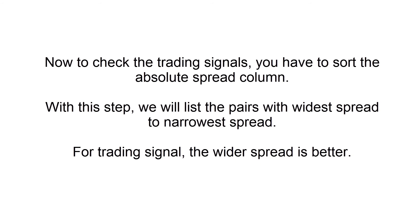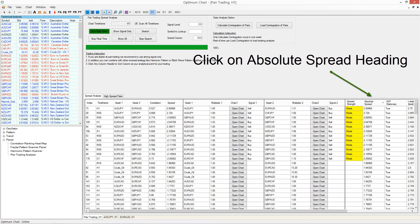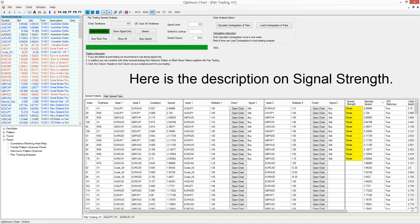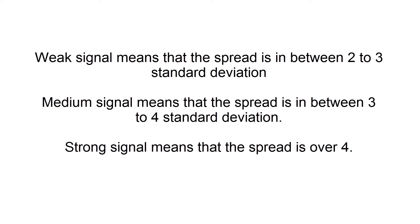To check the trading signals, you have to sort the absolute spread column. With this step, we will list the pairs with the widest spread to the narrowest spread — the wider the spread, the better. Signal strength is based on the spread of pairs, expressed in terms of standard deviation. A weak signal means the spread is between 2 to 3 standard deviations. A medium signal means the spread is between 3 to 4 standard deviations. A strong signal means the spread is over 4 standard deviations.